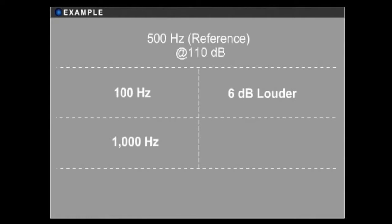For example, if a 500 Hz tone is played at 110 dB, a 100 Hz tone would have to be played 6 dB louder, and a 1000 Hz tone would have to be 3 dB louder to be perceived as the same volume. The ear is most sensitive between the frequencies of 1 kHz and 4 kHz, which coincidentally happens to be the frequency range at which a baby cries.